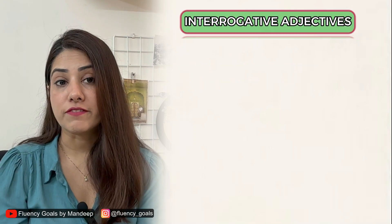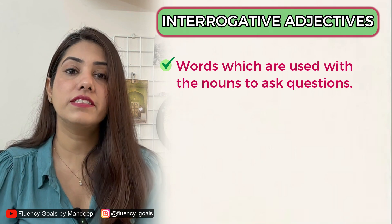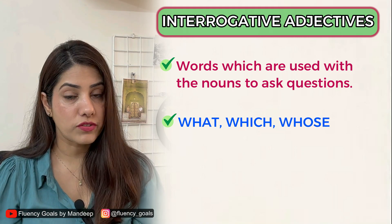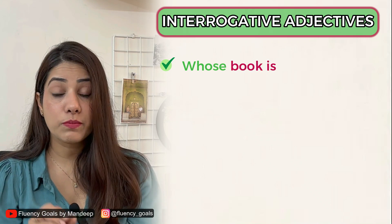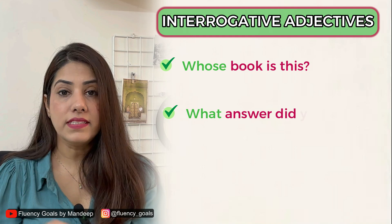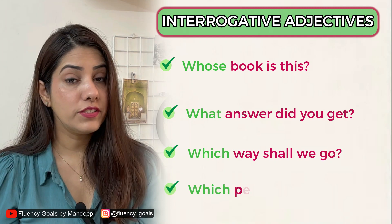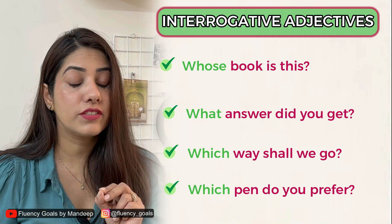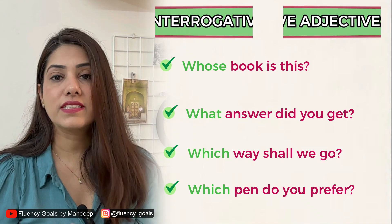Interrogative means question. Adjectives which are used with nouns to ask questions are called interrogative adjectives — like what, which, and whose. When these words are used with nouns to ask questions, they are interrogative adjectives. Examples: 'Whose book is this?' — 'whose' is an interrogative adjective. 'What answer did you get?' — 'what' is interrogative. 'Which way shall we go?' and 'Which pen do you prefer?' — 'which' is an interrogative adjective modifying the noun 'pen'.